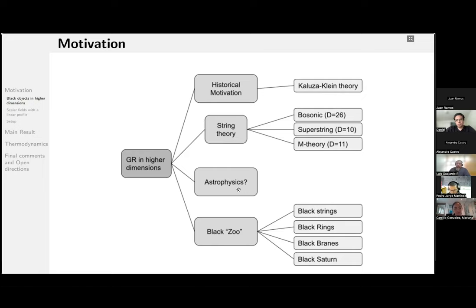However, maybe the most simple approach, the most pragmatic approach, is the fact that higher dimensions offer new physics, new subjects to study, and new objects to study. For example, black strings, black rings, black branes, or even a black Saturn that enlarged the phenomenology reached here.